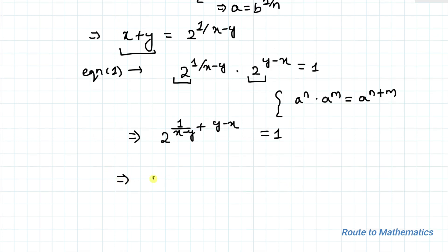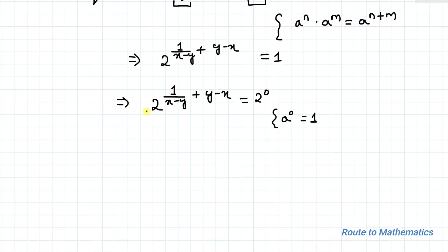This gives us 2 to the power [(1 by x minus y) plus (y minus x)] equals 1. Since 1 equals 2 to the power 0, the bases are the same on both sides, so we can equate the exponents. Therefore: 1 by (x minus y) plus (y minus x) equals 0.